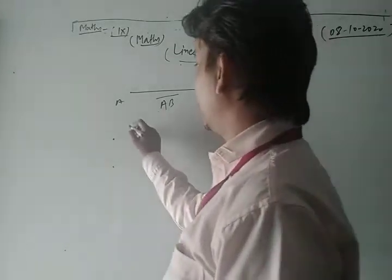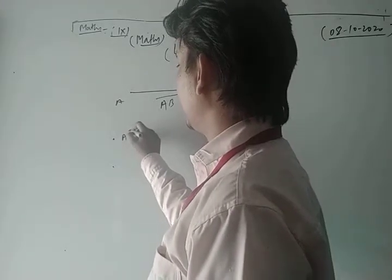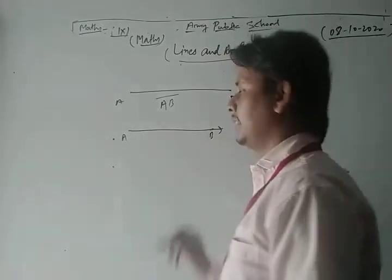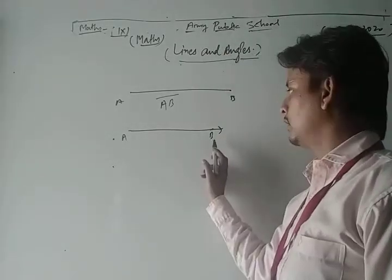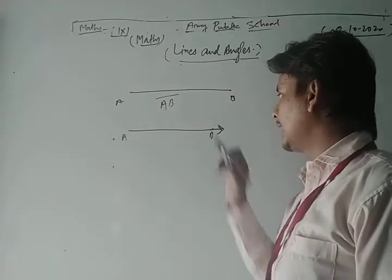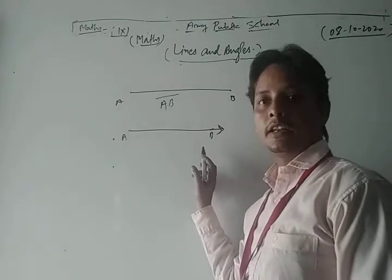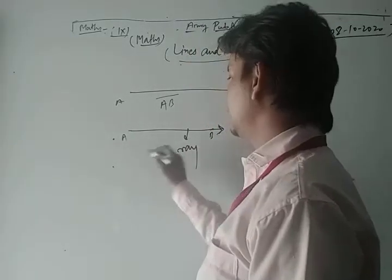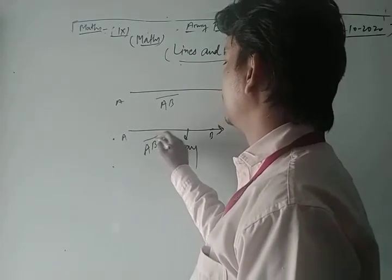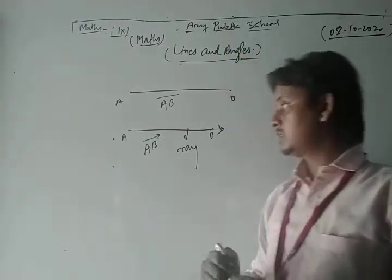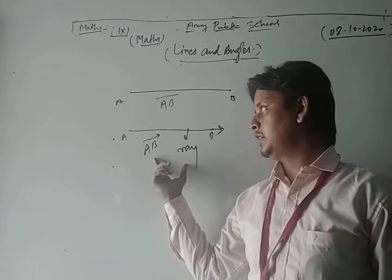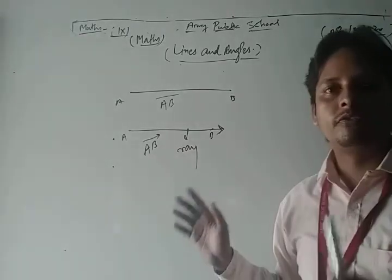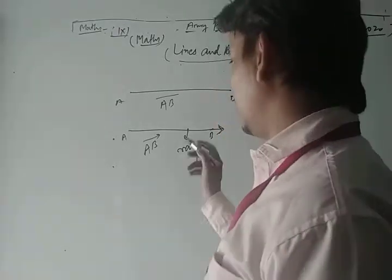If that line segment AB is extended in one direction, indicated as AB with an arrow, then this is called a ray. A ray AB is denoted in this way — this is the representation of a ray.